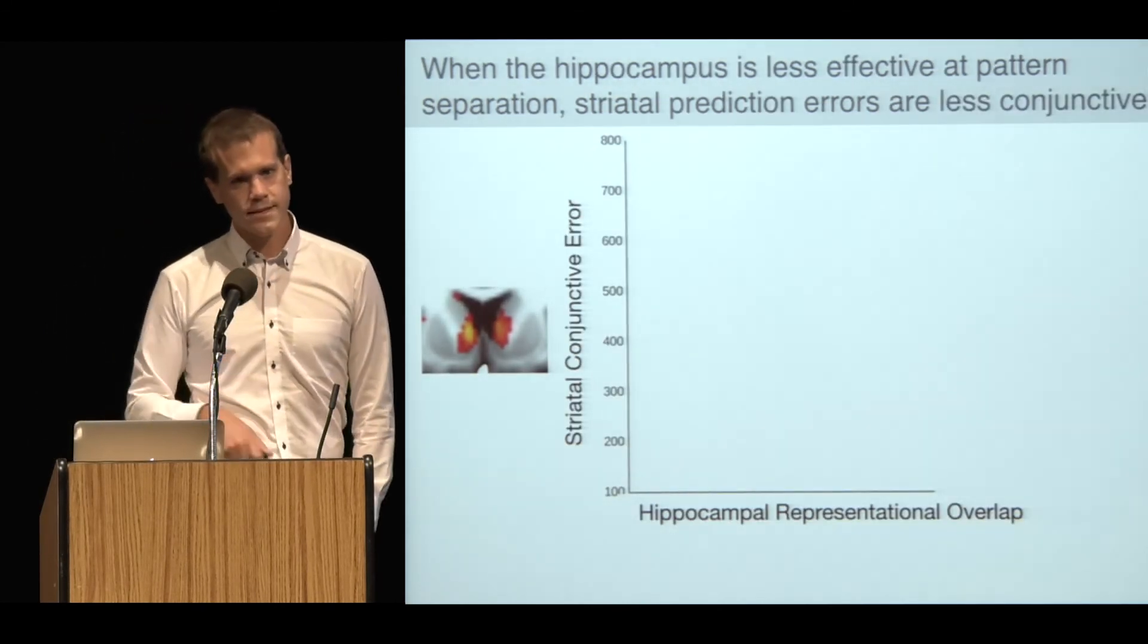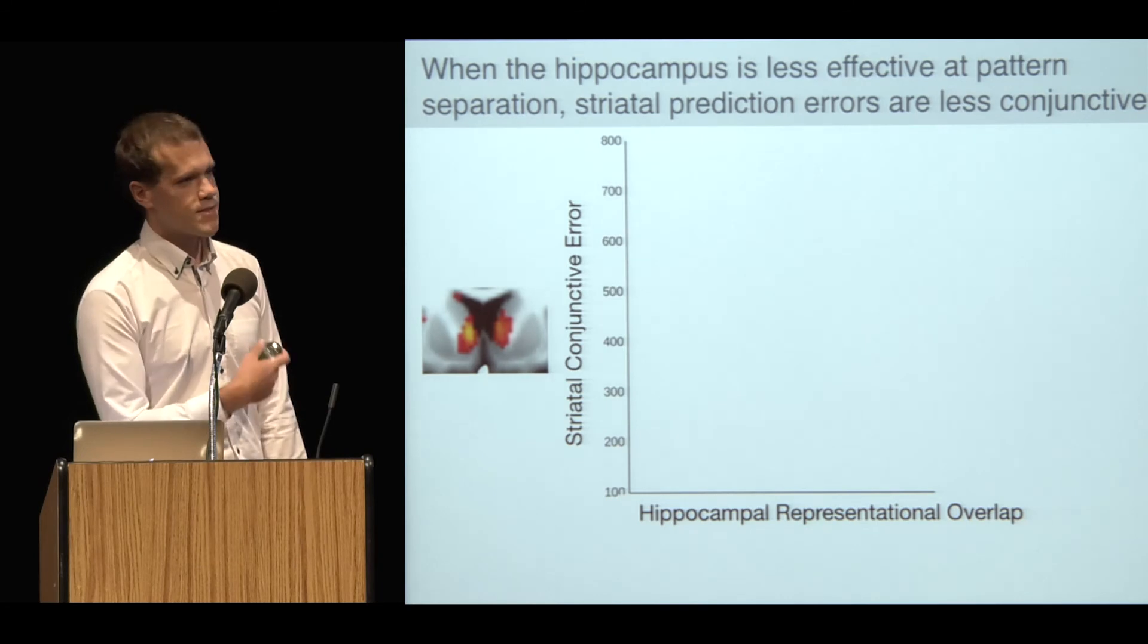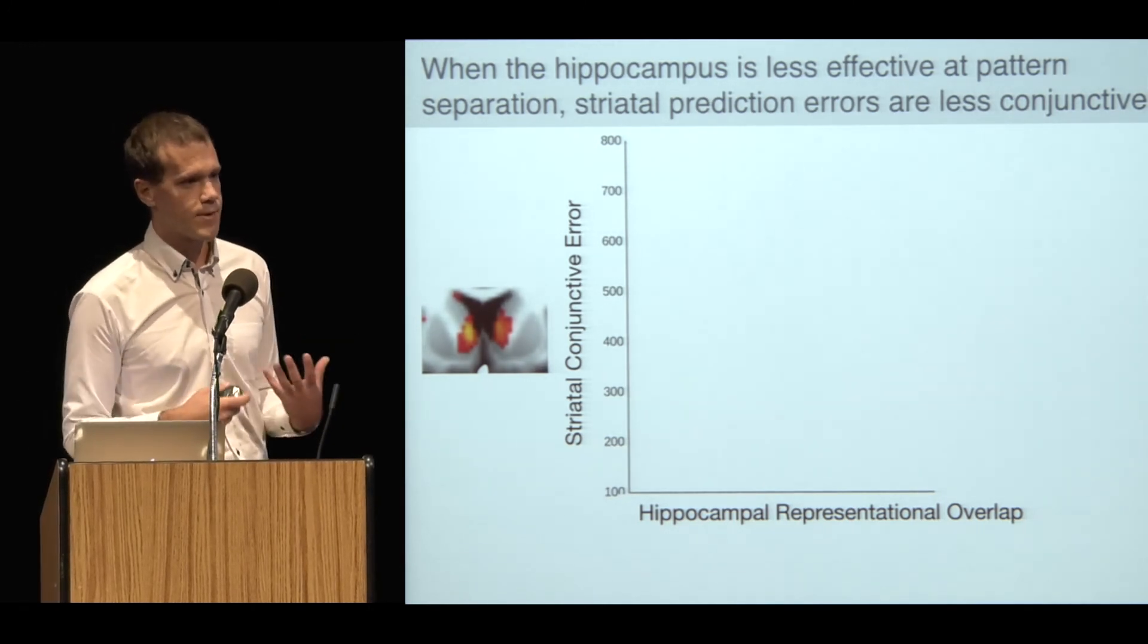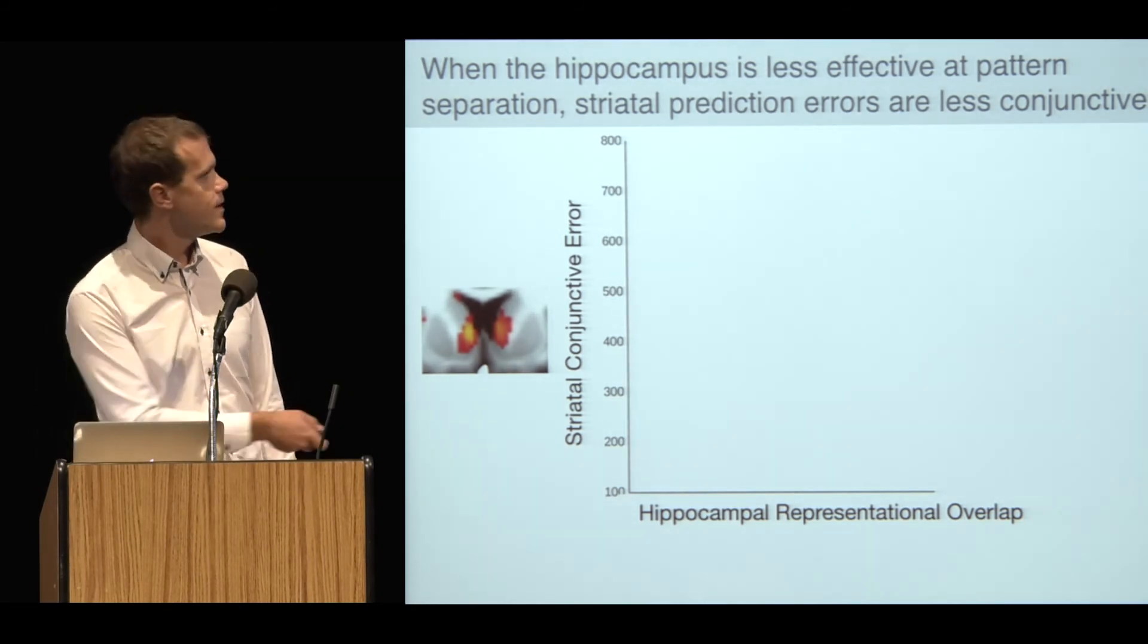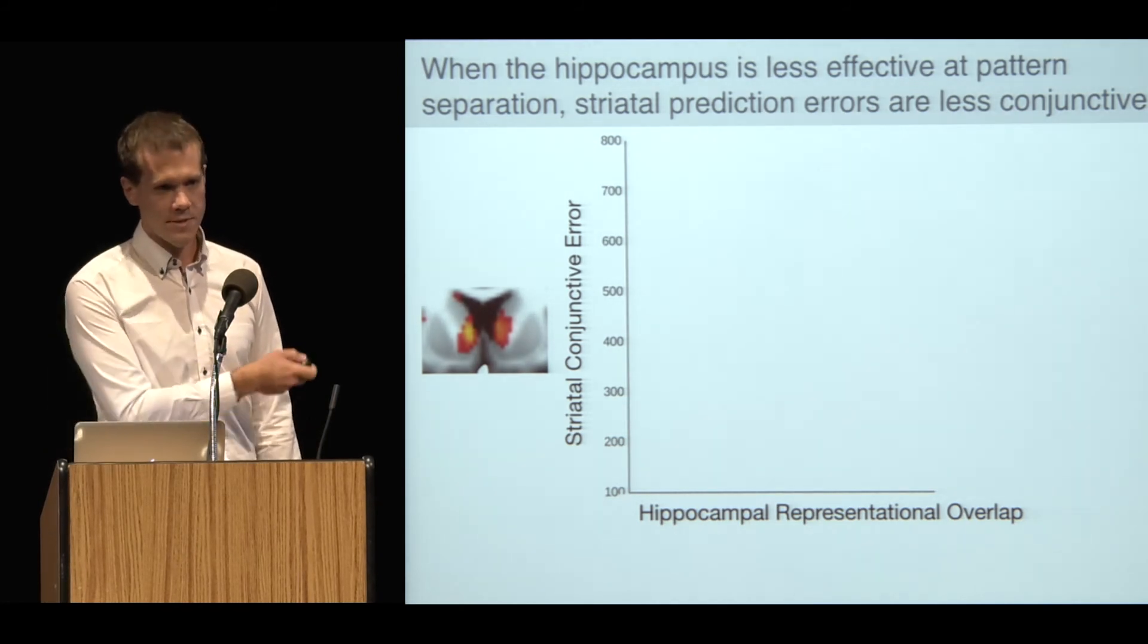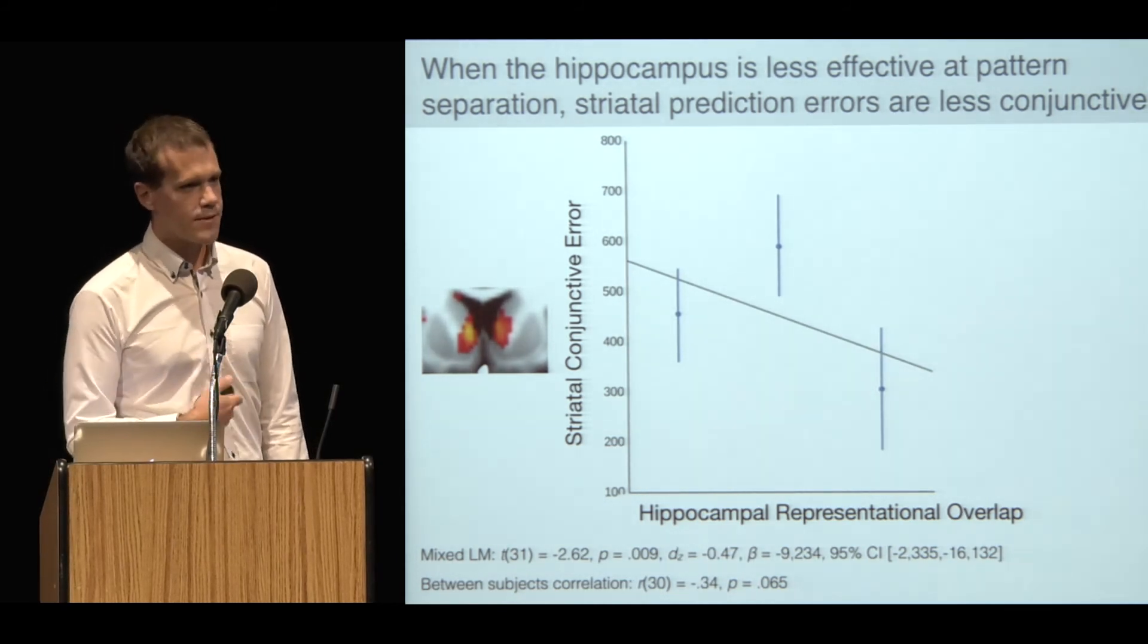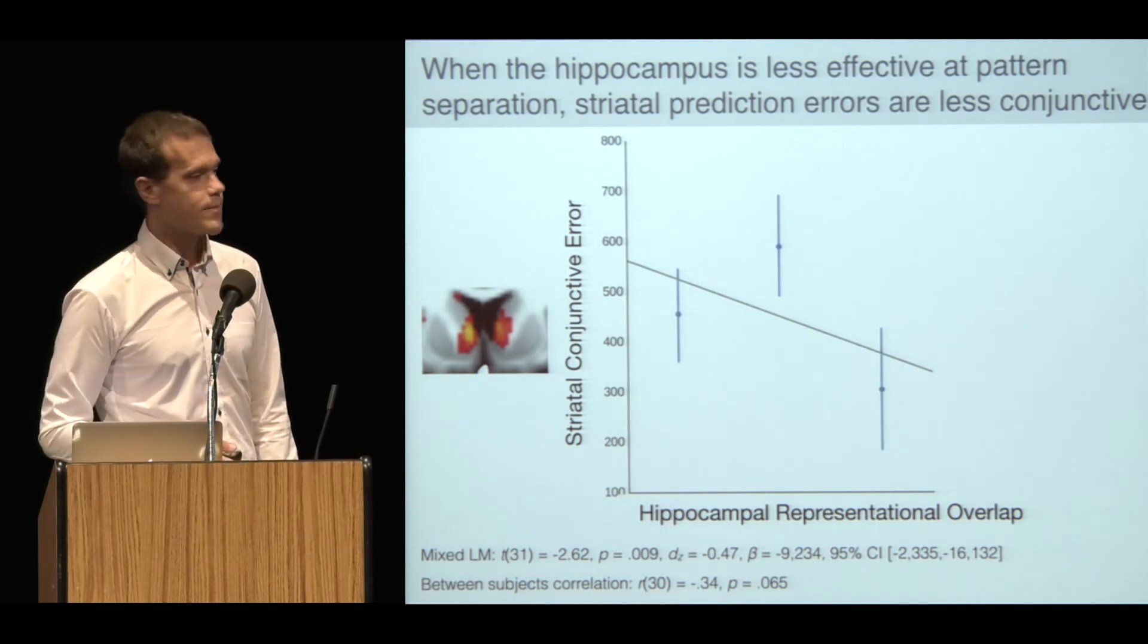I wanted to see if I could relate this to my striatal measures of learning. On the x-axis here is the same regressor, and this is a within-subject measure. Further on this x-axis are runs where the hippocampus does the worst job at pattern separating these representations. On the y-axis is the magnitude of the conjunctive error component of the striatum. You can see that within-subject, the runs where the hippocampus does the worst job at pattern separating are also the runs where the striatal error is least well accounted for by a conjunctive learning model.